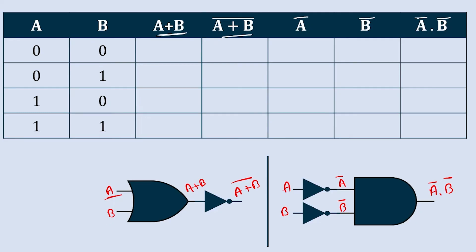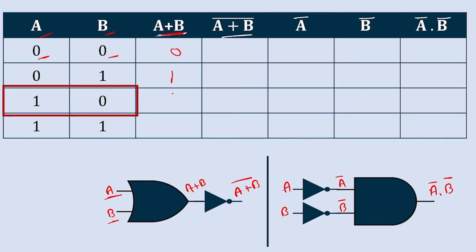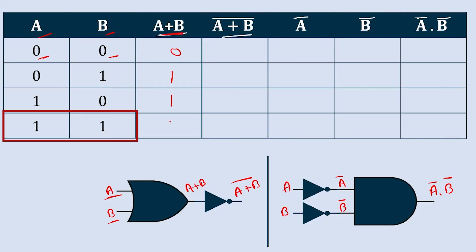Now let's verify the second law using the truth table with inputs A and B. For A plus B: 0 OR 0 = 0, 0 OR 1 = 1, 1 OR 0 = 1, and 1 OR 1 = 1. Taking the complement for A plus B bar: the complement of 0 is 1, complement of 1 is 0, 0, 0. This gives us the result of the LHS.